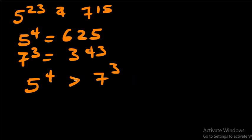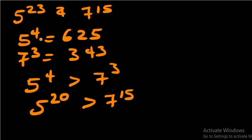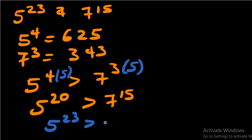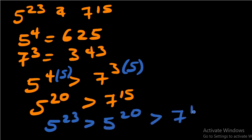This time, if we multiply both sides' exponents by positive five, we get five to the power of 20 is greater than seven to the power of 15. We multiply the exponent on each side by five. But obviously five to the power of 23 is greater than five to the power of 20, which is greater than seven to the power of 15.